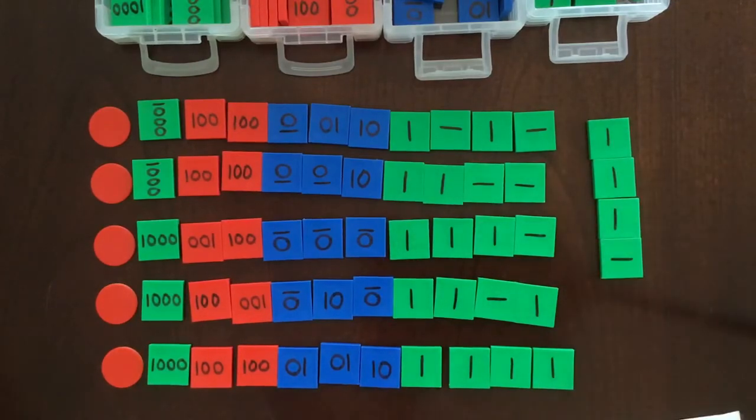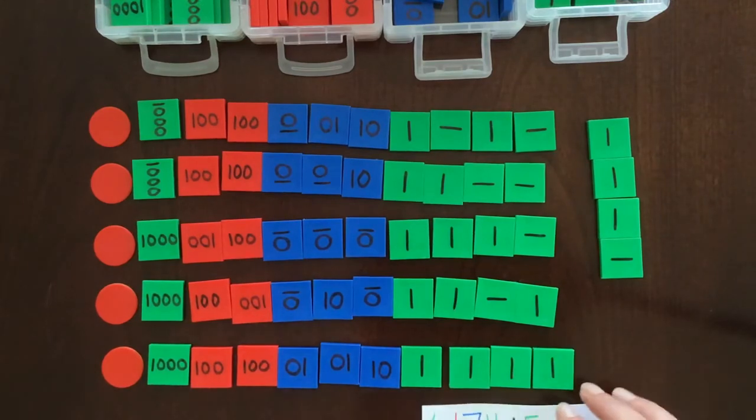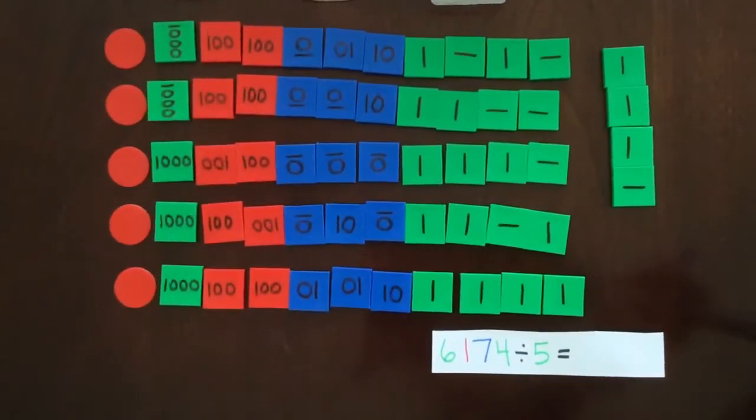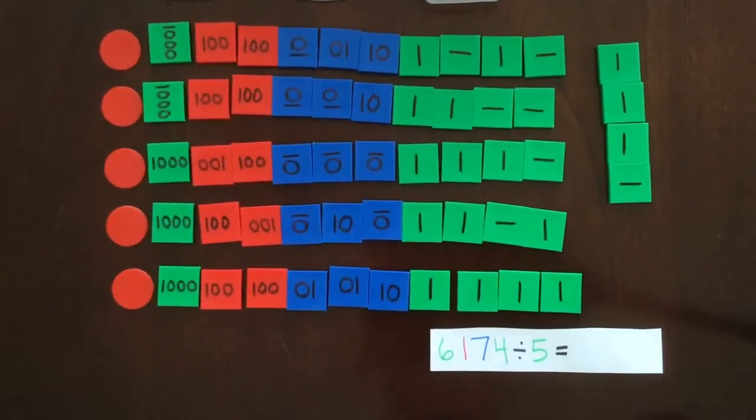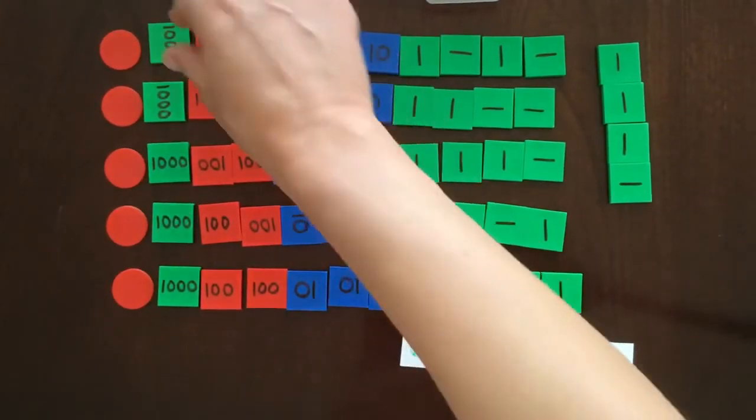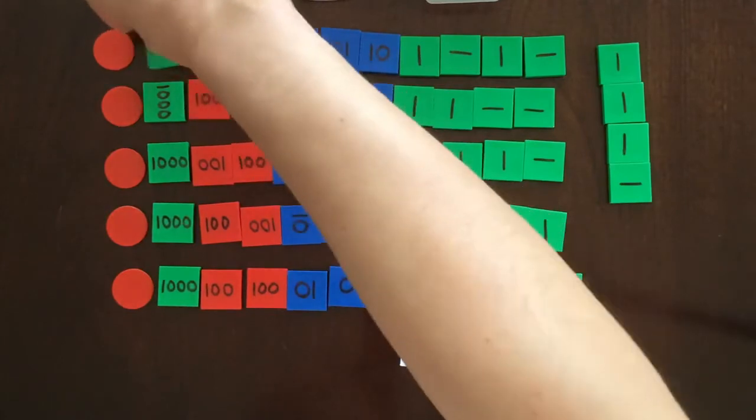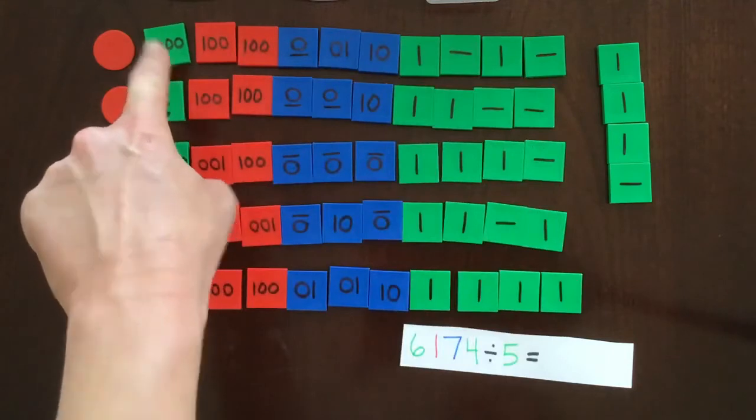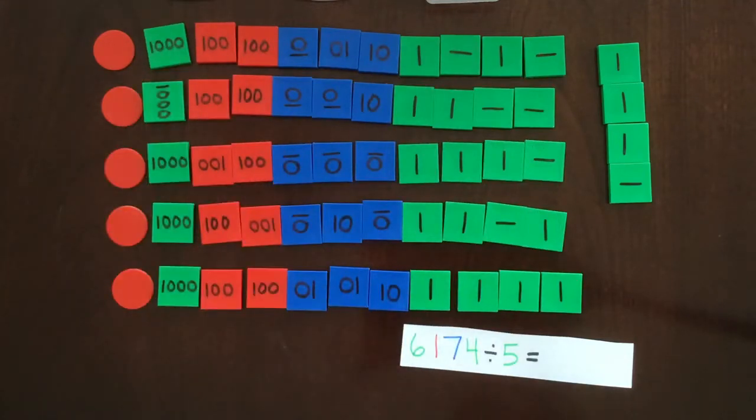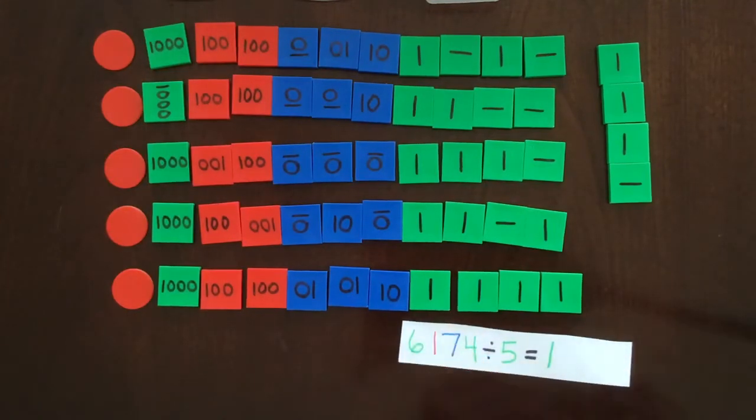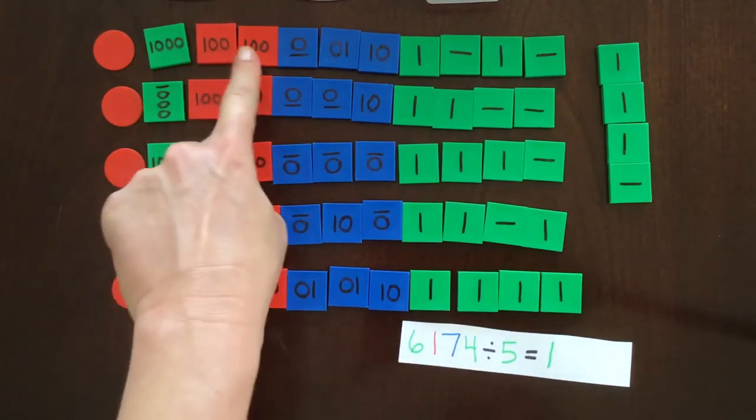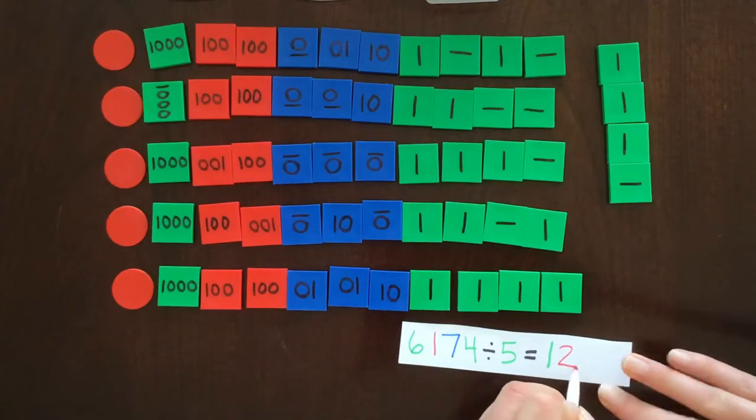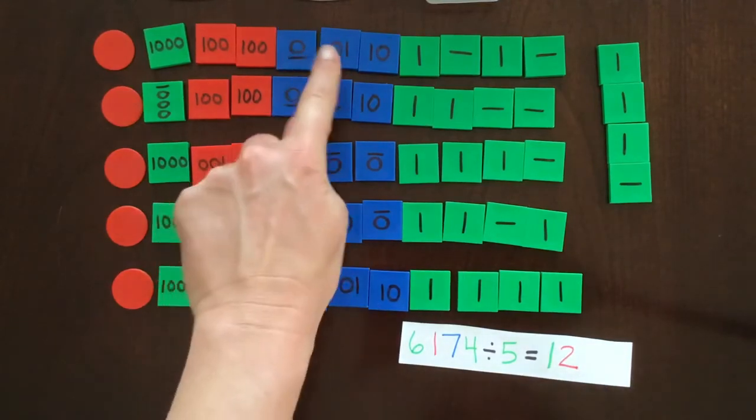So let's record this. And we do not have a whole lot of room here. So remember, our answer is how much just one of these gets. So here, we have 1,000. Let's record that here. Two hundreds. I'll write that here.